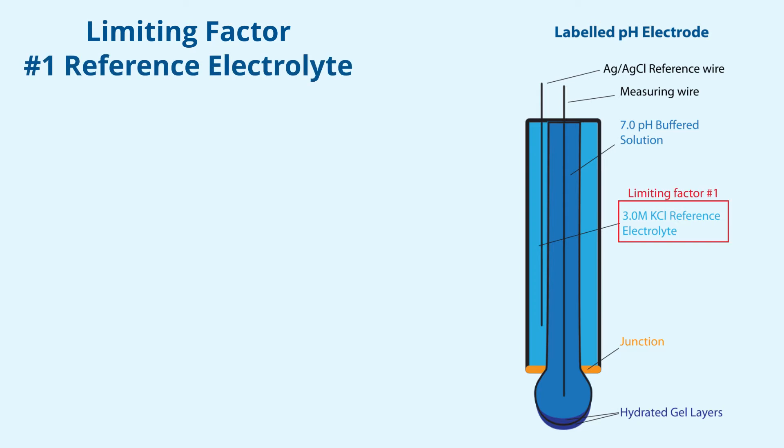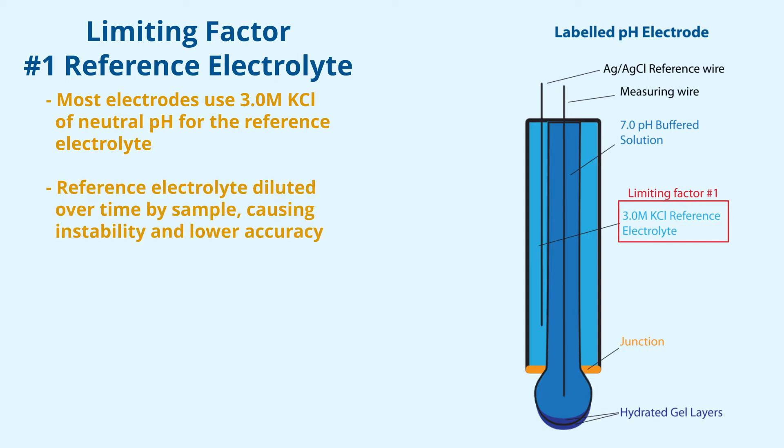One is the reference electrolyte. This solution is typically 3 molar potassium chloride of neutral pH and is exposed to the sample solution through the junction. Over time, the sample diffuses through the junction to dilute the reference which destabilizes the circuit connection.